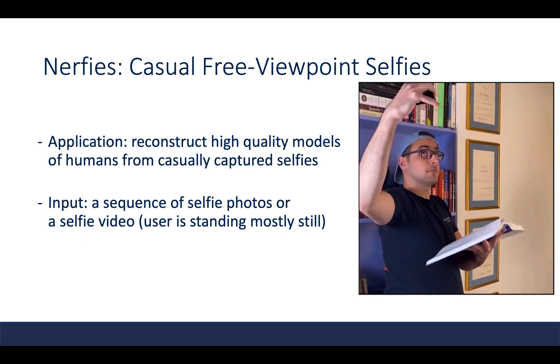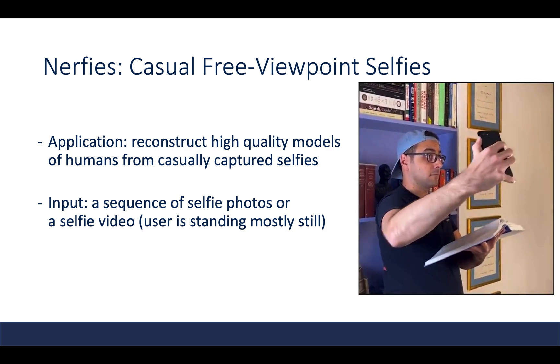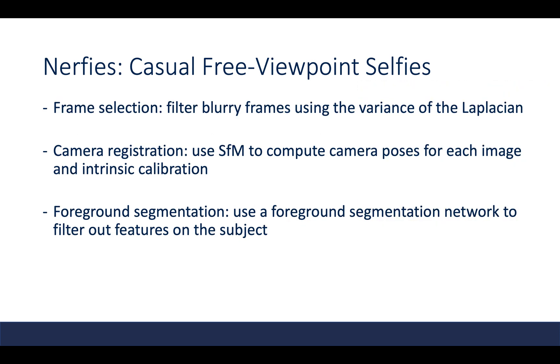To collect the data, we collect a sequence of selfie photos or a selfie video while the user is standing mostly still. We first filter out blurry frames using the variance of the Laplacian, and then we use structure from motion to compute camera poses for each image and intrinsic calibration. To further identify which regions correspond to foreground and background, we use an existing foreground segmentation network to filter out features on the subject.